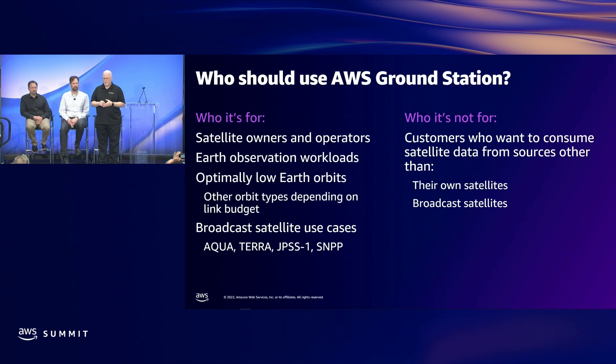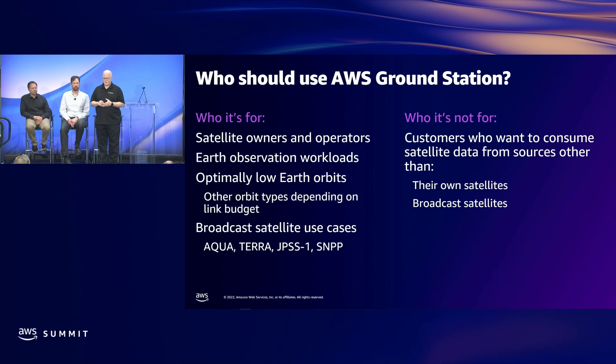AWS Ground Station is designed for satellite owners and operators who need a way to connect to their low-Earth orbit satellites with the AWS Global Network. It's ideal for customers with Earth observation workloads in low-Earth orbits, but it can support higher-altitude orbits if the link budgets allow, and we can help you with making that determination. AWS Ground Station is not designed for customers who want to consume satellite data collected by someone else — for those requirements, there are alternatives such as AWS Open Data.